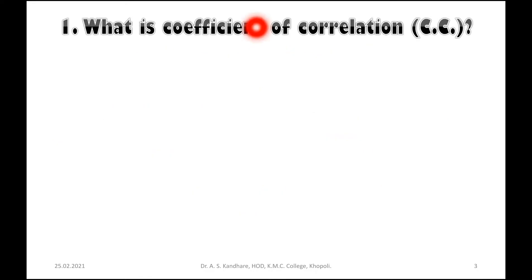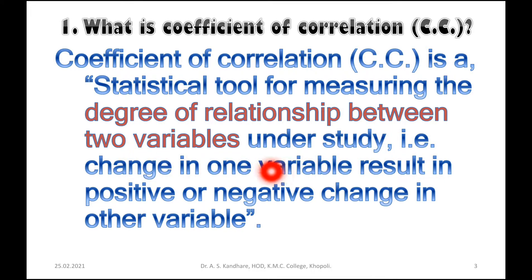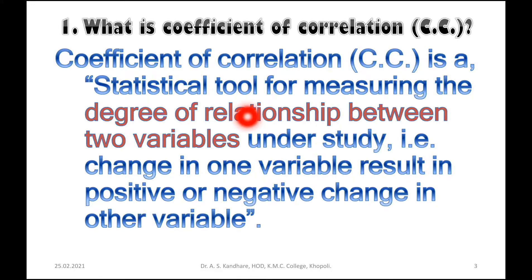Coefficient of Correlation is a statistical tool for measuring the degree of relationship between two variables under study. A change in one variable results in a positive or negative change in the other variable. In biological data, there are two variables that change depending upon one another.